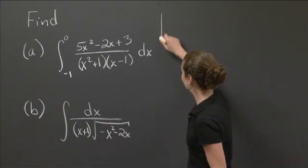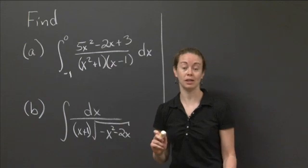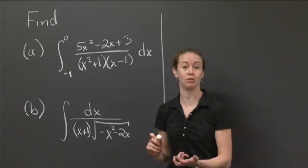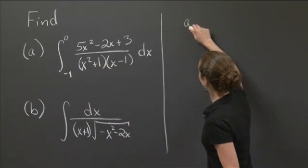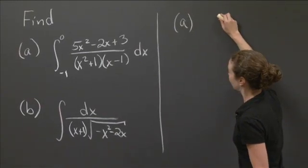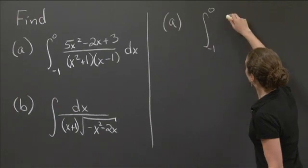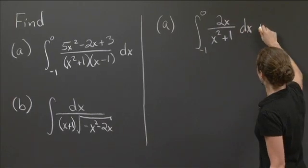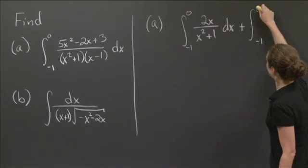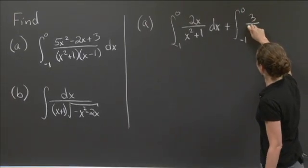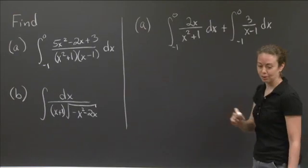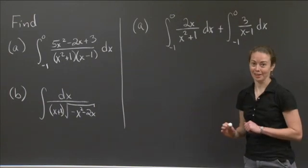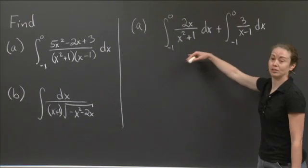I'm going to show you what I got with my decomposition and we'll go from there. When I decompose for letter a, I actually get two integrals. The first one is the integral from minus 1 to 0 of 2x over x squared plus 1 dx. The second one is the integral from minus 1 to 0 of 3 over x minus 1 dx. And now from here, we just have to integrate both of these.